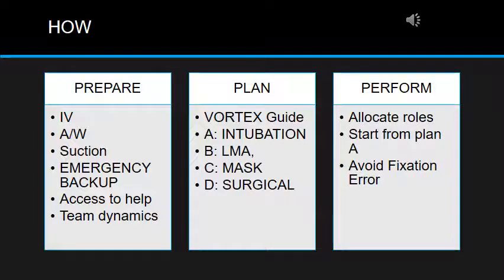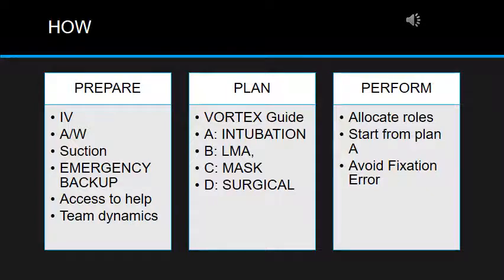Now we reach the point of how to intubate the patient. We should prepare everything before starting, then plan, and then perform the intubation. For preparation: good IV access with a running fluid, airway devices including intubating devices, supraglottic airways and face masks, working suction, emergency backup such as an Ambu bag, and access to help knowing where the buzzer is. Team dynamics should be addressed — knowing who is around, their names, and what they can do in a crisis. For planning, I use the Vortex guideline.